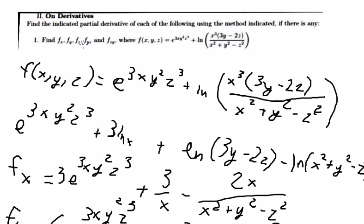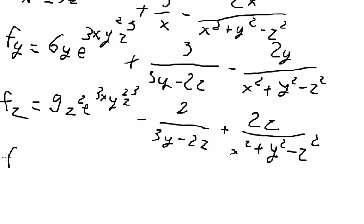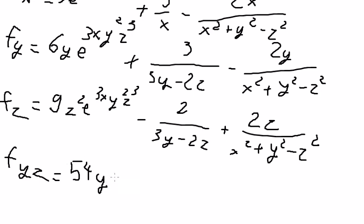Now let's go to Fyz. That means we take the function Fy and now do the derivative with respect to z. We have z here, and we have number 3 here — 3 multiplied with number 3 gives 9z. So you get 54y·z squared times e to the power of 3x·y squared·z to the power of 3.